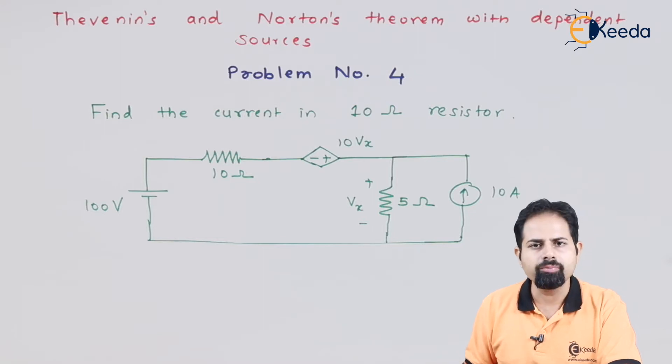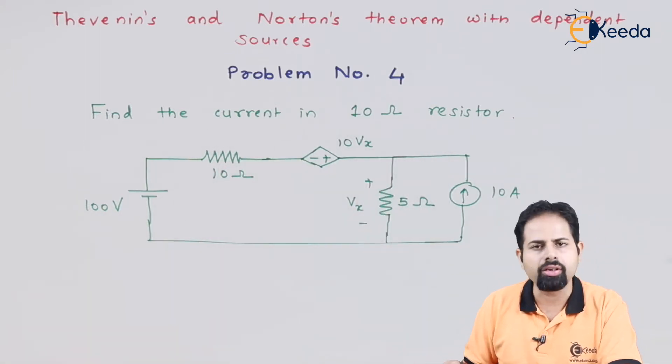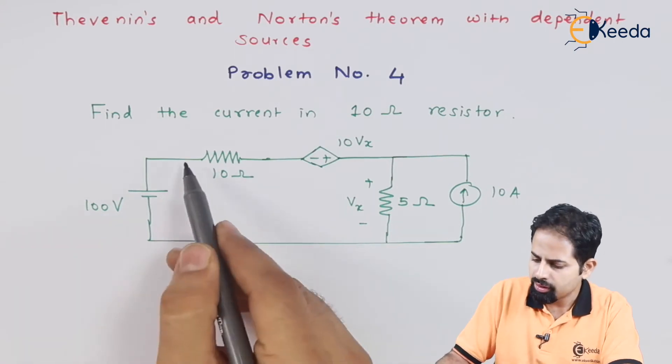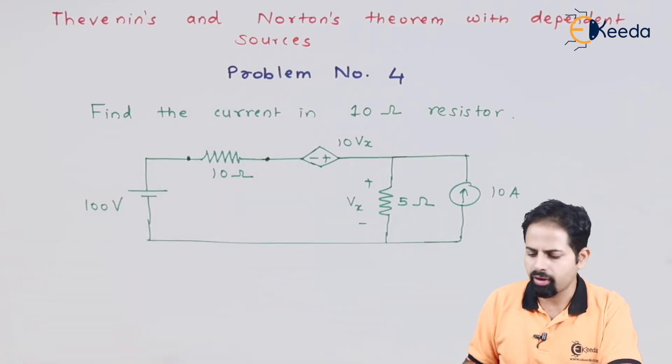So we go step by step. As usual, step number one will be calculation of Vth. So because we want current in 10 ohm resistor, what we will do, we will first open this branch. So this 10 ohm resistor will open it as step number one.